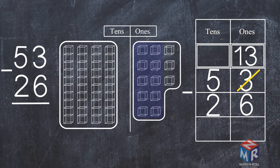Now we only have 4 tens, so we cross out the 5 and write 4 at the top.